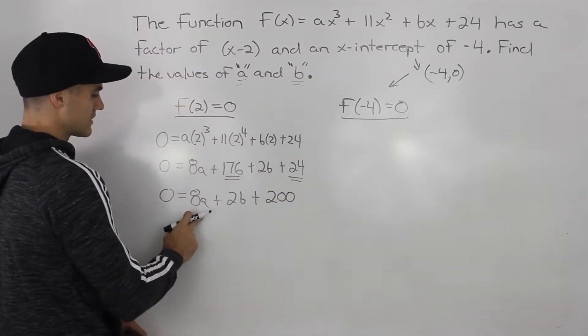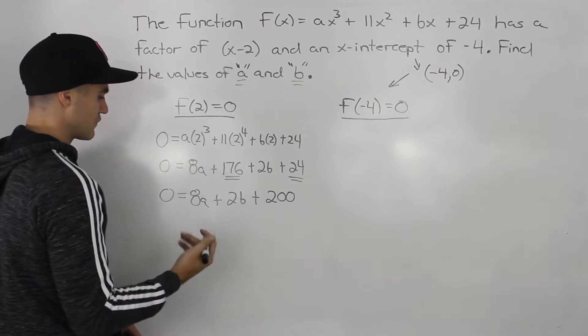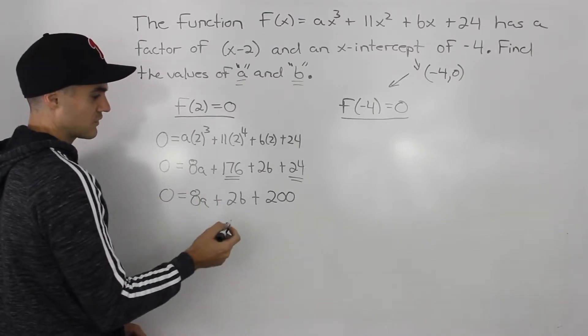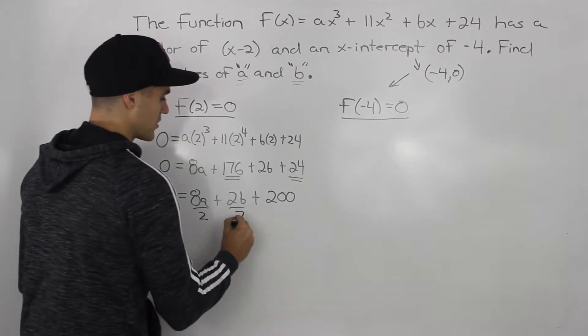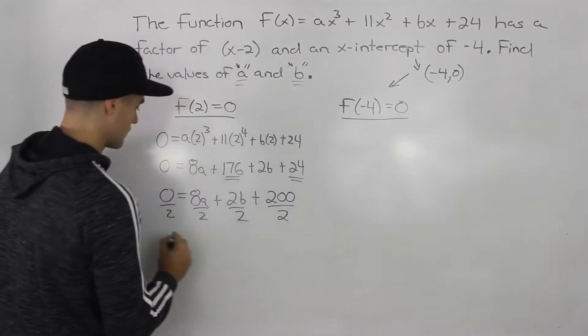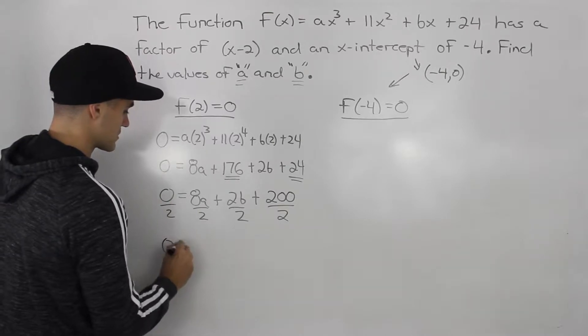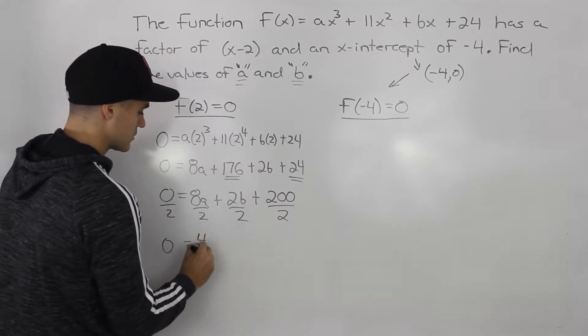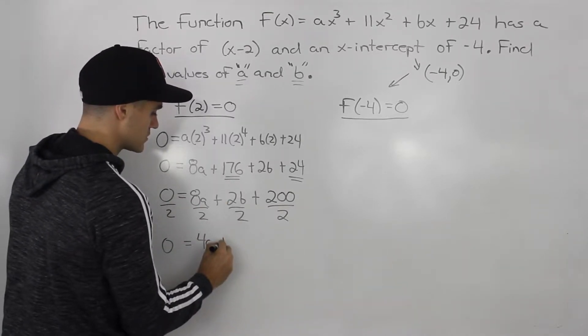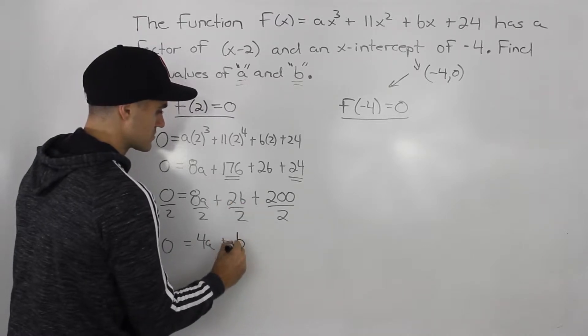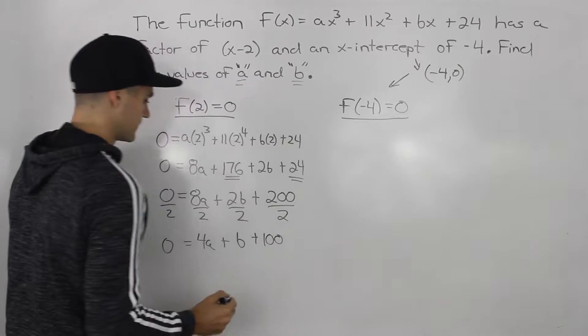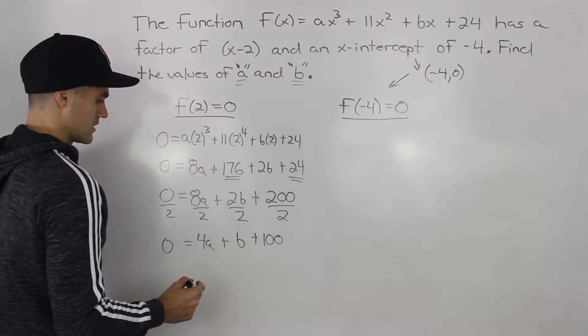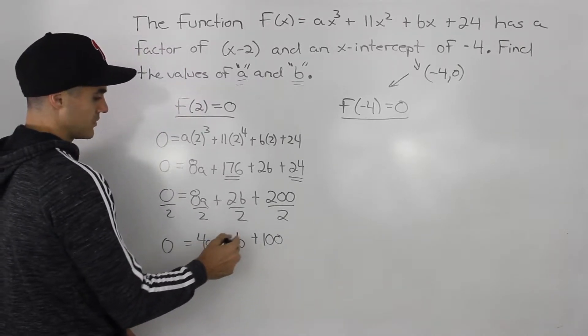Now you could leave it like this. You could simplify it even further. What you can do is notice how everything is a factor of 2. So you can divide every expression by 2 to simplify it even further. So 0 divided by 2 is still 0. 8 divided by 2 is 4a. 2b divided by 2 is just b. 200 divided by 2 is just 100.